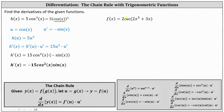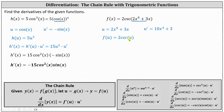For the last example, we have f of x equals 2 cosecant of the quantity 2x to the 5th plus 3x. The inner function u is 2x to the 5th plus 3x. This indicates that u prime is 10x to the 4th plus 3. We can write f as a function of u as f of u equals 2 cosecant u. Applying the chain rule to find f prime of x, f prime of x equals f prime of u times u prime, where f prime of u equals 2 times negative cosecant u cotangent u, and then times u prime. Now we perform substitutions for u and u prime.